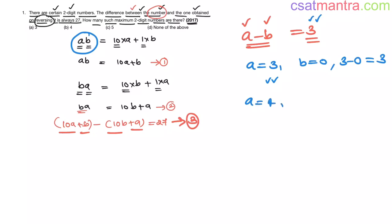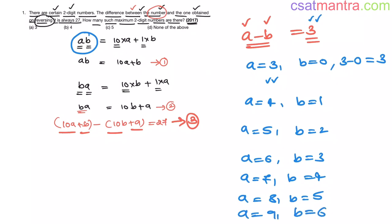Now A equals 4, B equals 1. A equals 5, B equals 2. A equals 6, B equals 3. A equals 7, B equals 4. A equals 8, B equals 5. A equals 9, B equals 6. Very simple my friends. Once you got this equation, all you have to do is look for the possibilities.